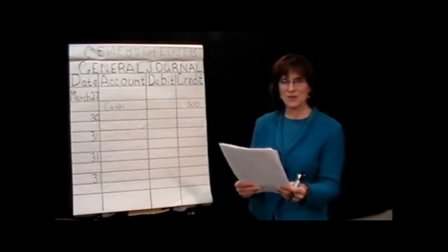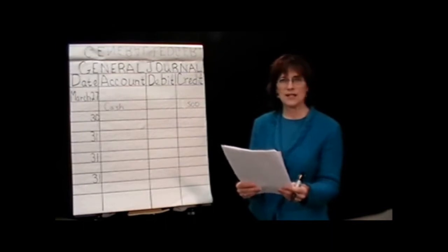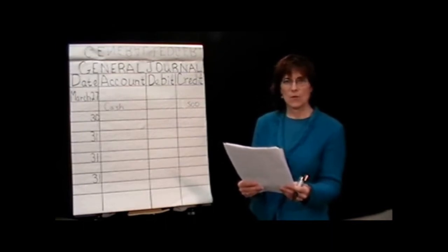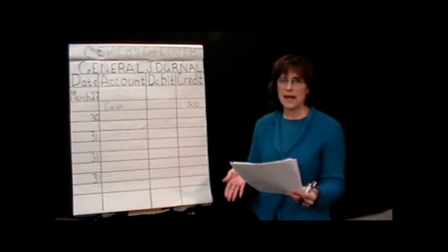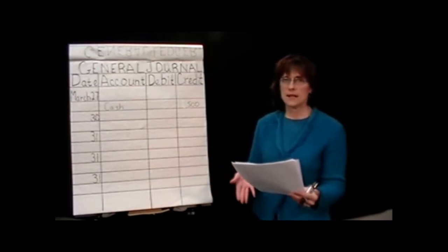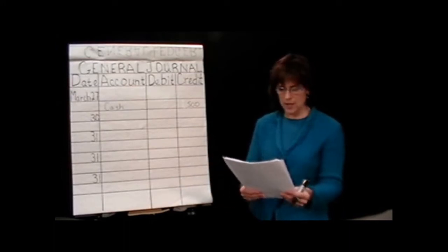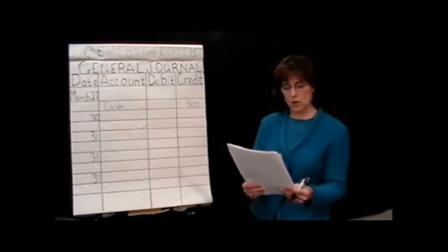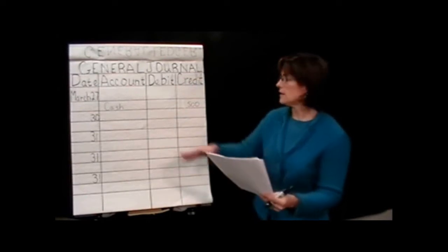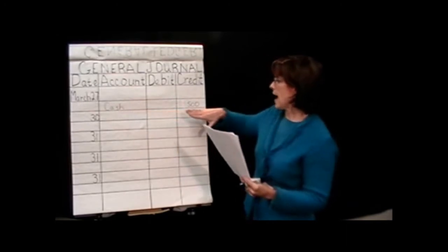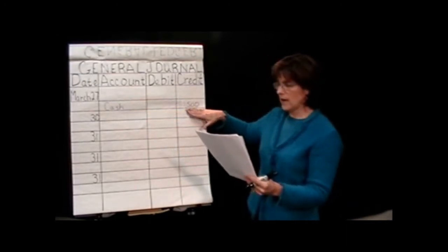Is the cash account increasing or decreasing as we pay? Well, it's decreasing or it's going out. If you remember, cash is an asset. Decreases in assets are recorded by credits, and credits go on the second line. So I went ahead and just penciled in cash. We're going to credit for the $500.